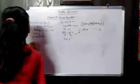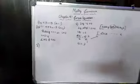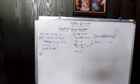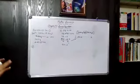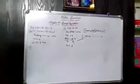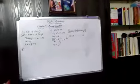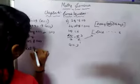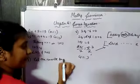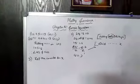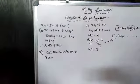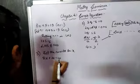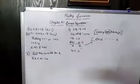Let us solve the third one. The question says: add 4 to 8 times a number, you get 60. They gave it in sentence form and we have to write it as an equation. Let the number be X. Add 4 to 8 times X: so the equation is 8X plus 4 equal to 60.